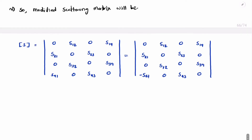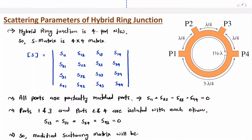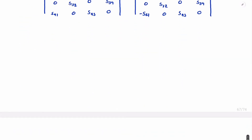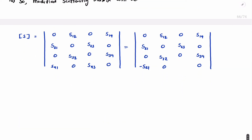Applying input at port 3, the signal is equally bisected towards port 2 and port 4. The spacing is lambda by 4 on both sides, giving 90-degree phase on each side. So S23 equals S43 — input at port 3, output at port 2 equals output at port 4. We replace S43 by S23.